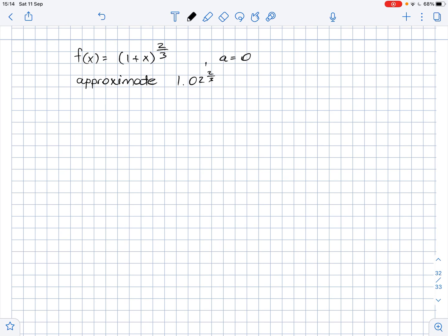We need to find the first four non-zero terms of the binomial series centered at zero for the given function and use the first four terms of the series to approximate the given quantity.